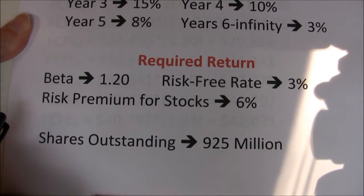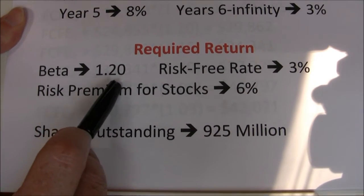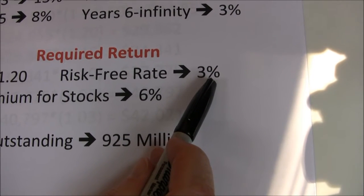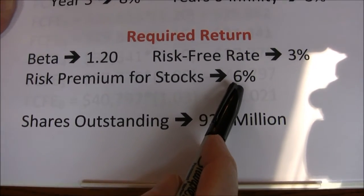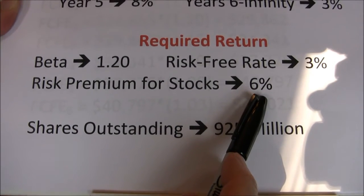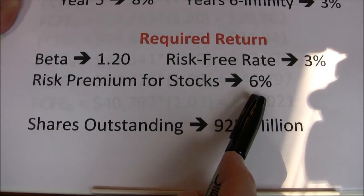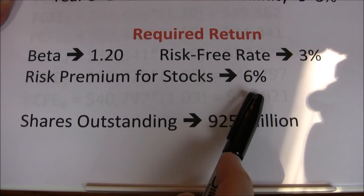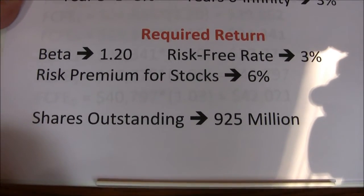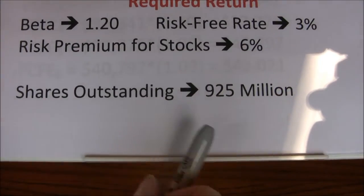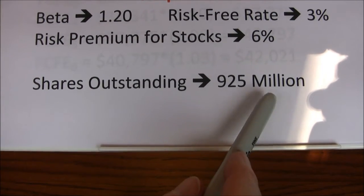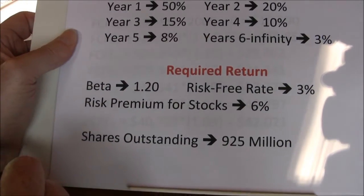Next we need a discount rate, and I'm going to use the security market line. I looked up the beta for Apple and it was around 1.2. The risk-free rate — I use the 10-year Treasury note for this — is right around 3%. And then a risk premium for stocks: I assumed 6%, which can vary depending on the outlook and how sensitive investors are to risk. I decided to use a relatively high risk premium because the economy is not real strong and there are concerns about the debt situation in the US and Europe. Also, the last thing we need is the number of shares outstanding, because the free cash flow to equity model gives us a firm value and we want to convert that to a share price by dividing by shares outstanding.